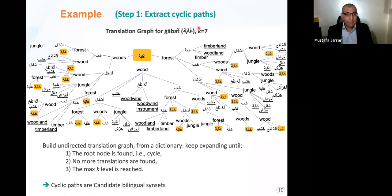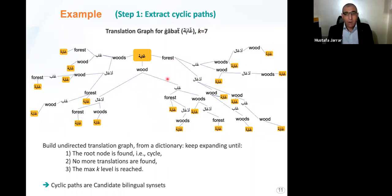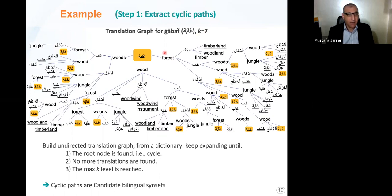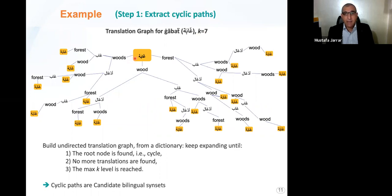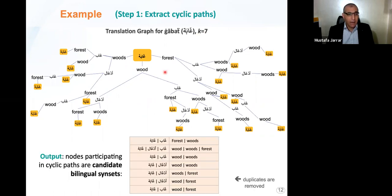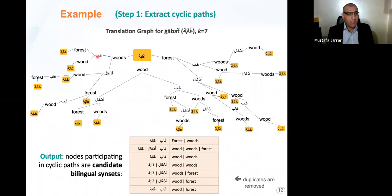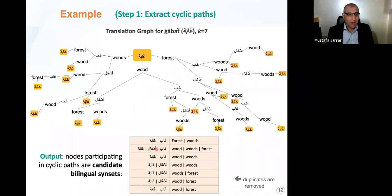We keep the cycles and convert them into synsets — bilingual synsets. Nodes participating in cyclic paths are considered candidate synsets. For example, one Arabic word means 'woods', and 'woods' translates back to that Arabic word, and another Arabic word means 'forest'. This is a cycle, so we have two English words — 'woods' and 'forest' — forming a synset. A longer cycle gives us 'woods', 'forest', 'wood' and the corresponding Arabic words forming bilingual synsets. We remove duplicates because many duplicates are generated.